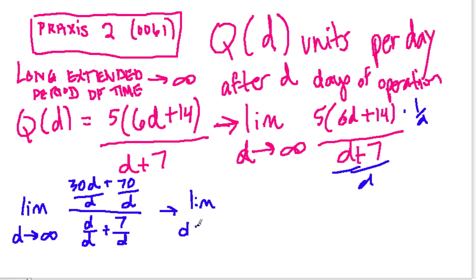So now the limit as D approaches infinity. These are just going to cancel out, and we get 1 here, and then this is going to be 30. So we get 30 plus 70 over D over 1 plus 7 over D. And so now if I was to plug infinity into this equation, what would happen to 70 over D? Well, D is becoming infinitely large, so 70 over D is becoming infinitely small. And 7 over D, the same thing. As D becomes really, really big, 7 over D becomes nothing.